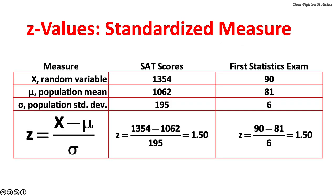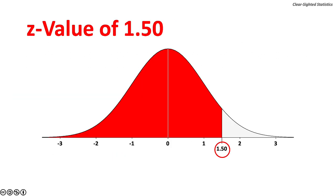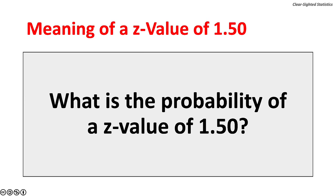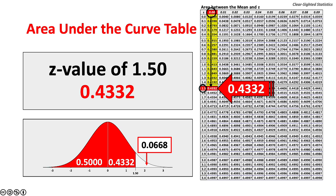For example, we can compare SAT scores and grades on the first statistics exam. An SAT score of 1354 and a grade of 90 on the first statistics exam both have z-values of 1.50. This normal curve shows the placement of the z-value of 1.50. Using the area under the curve table, a z-value of 1.50 represents 43.32% of the curve above the mean. This score, therefore, represents the top 93.32%.